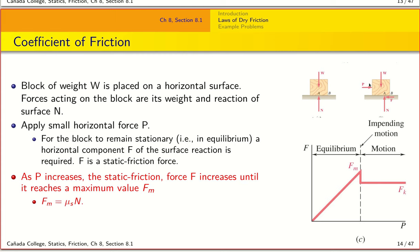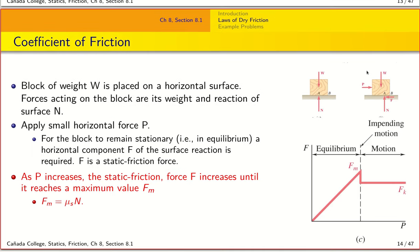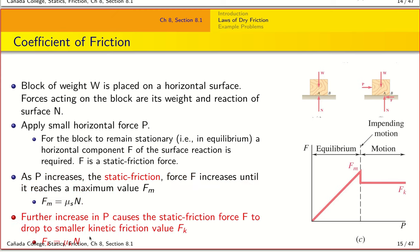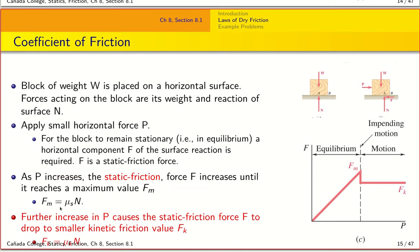As I keep increasing the load P, at some point the block is going to move. The point at which you reach the maximum force before the block starts moving has a value called FM — the maximum friction force during the time the block is stationary. This maximum static friction force is defined as FM = μs · N, where μs is called the coefficient of static friction.